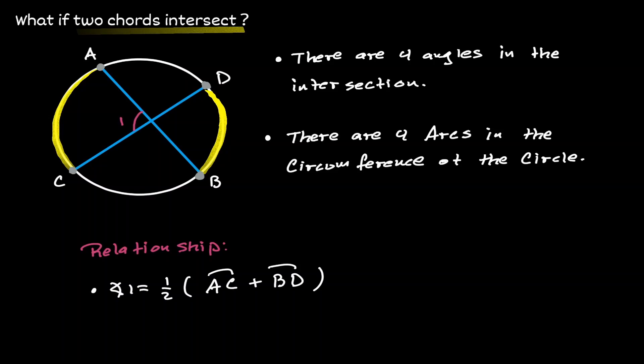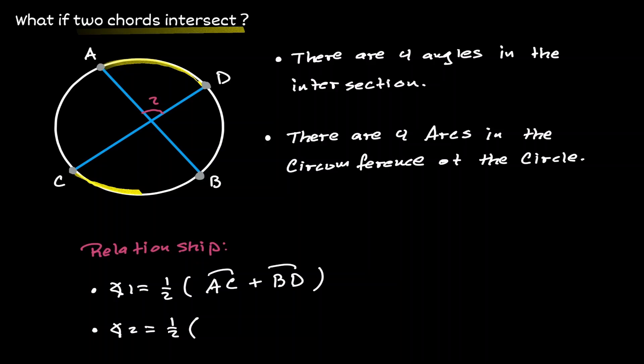This is true for all the created angles in our intersection. So now consider angle 2: that is going to be equal to half of the sum of the opposite arcs, which are arc AD and arc CB.